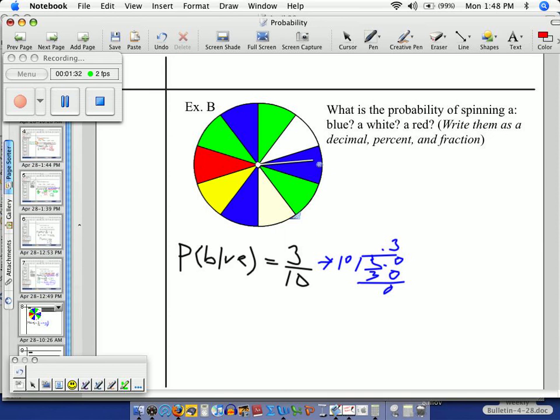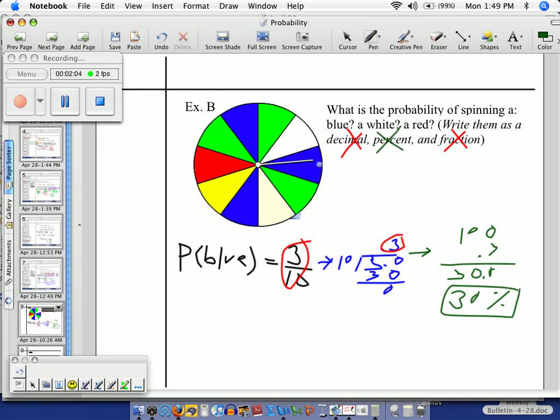So I have two out of the three answers. The decimal right here, I've got the fraction to begin with. All I'm missing is my percent. And to make a percent, I take my decimal, point three, and I multiply it by one hundred. And you end up with thirty percent.